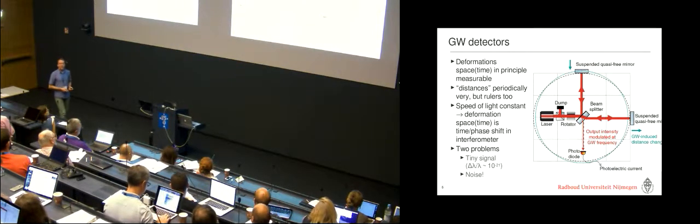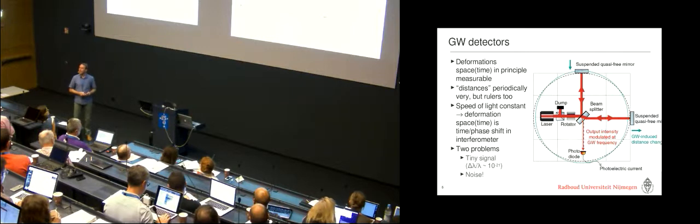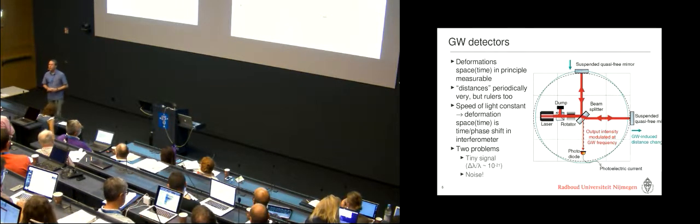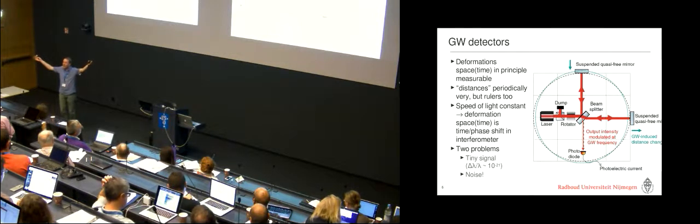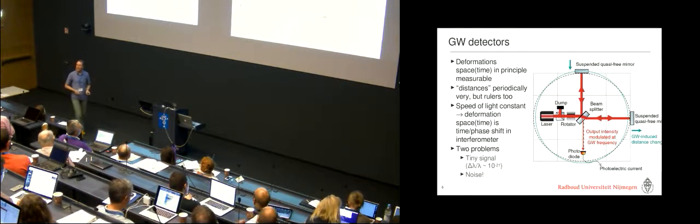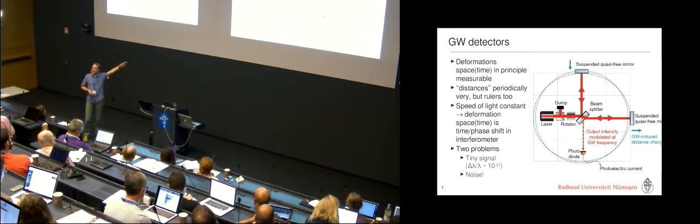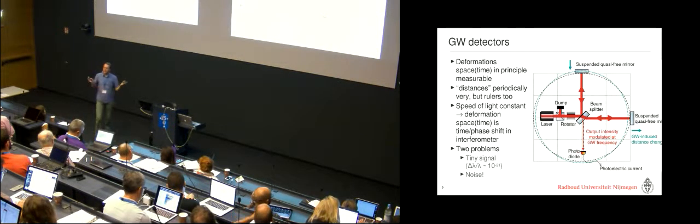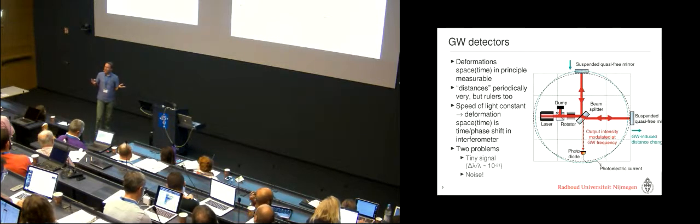The other thing is noise. And so the typical lengths you want to measure is 10 to the minus 20 or 21 of the arm length. And so if you have kilometer length arms, this is still in the, I think, attometer or whatever, 10 to the minus 18 meter range.